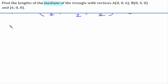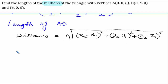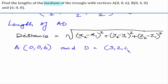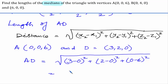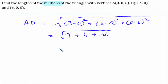To find the length of AD using the distance formula, A is (0, 0, 6) and D is (3, 2, 0). AD = √[(3-0)² + (2-0)² + (0-6)²] = √[9 + 4 + 36] = √49 = 7 units.